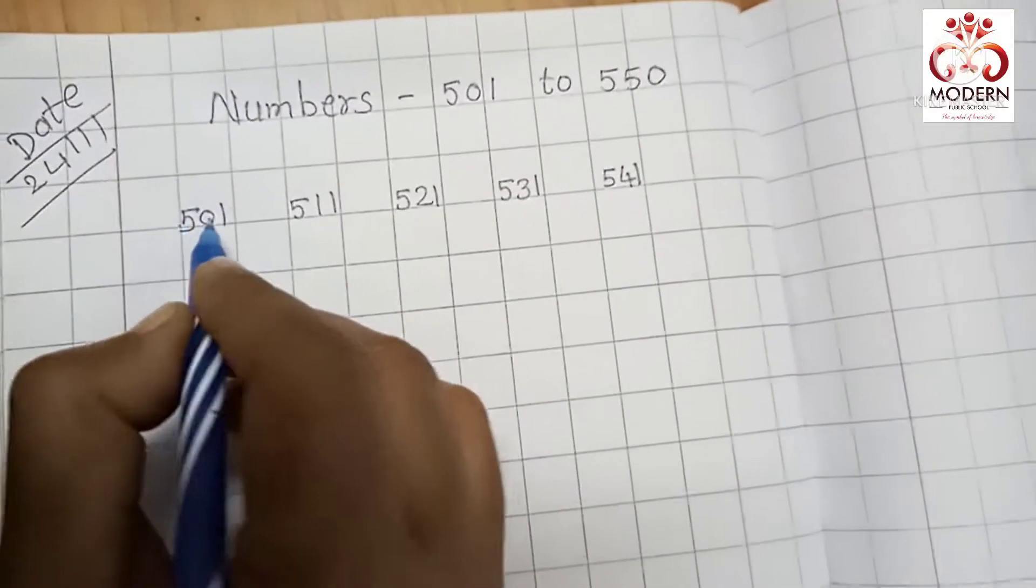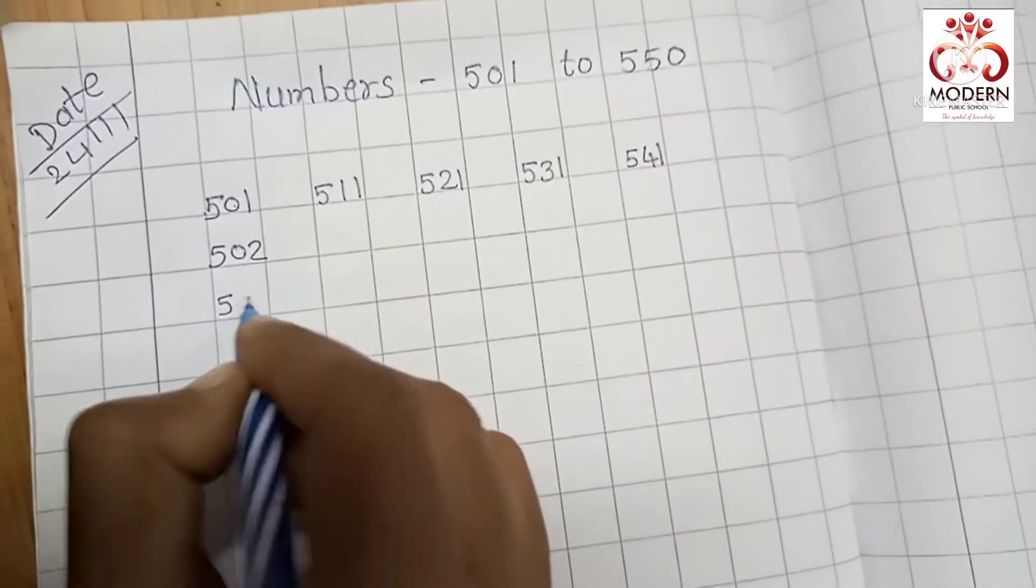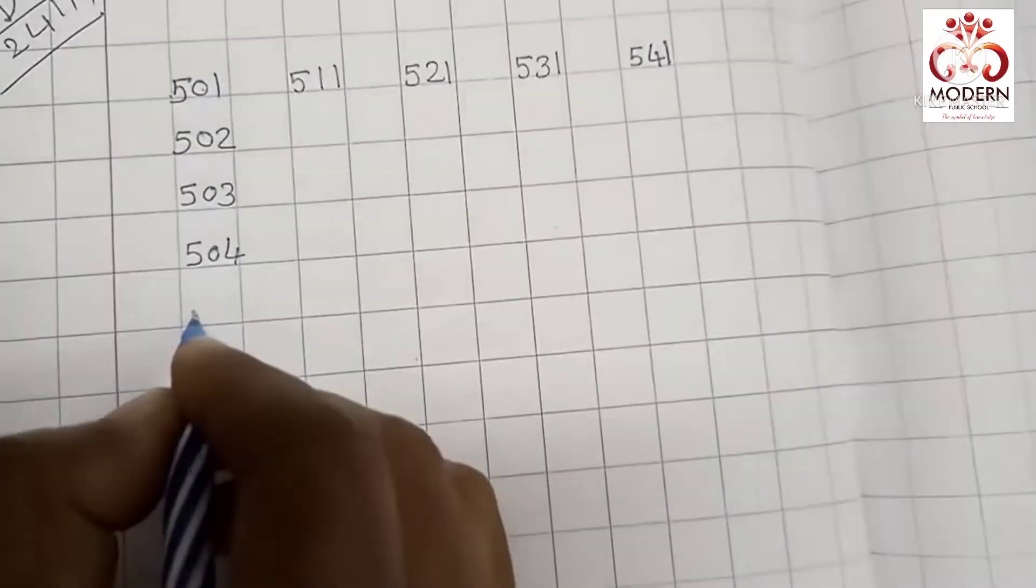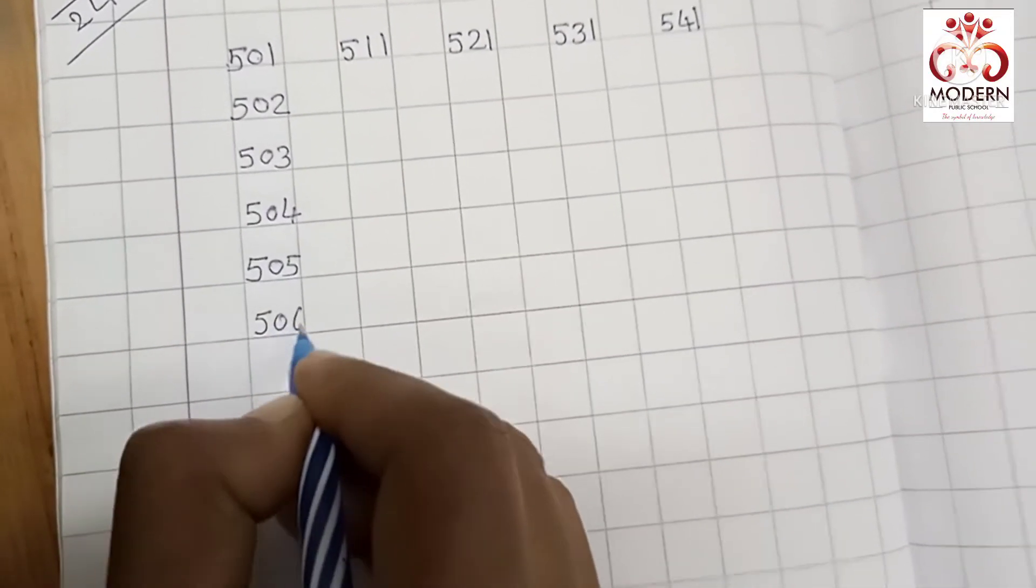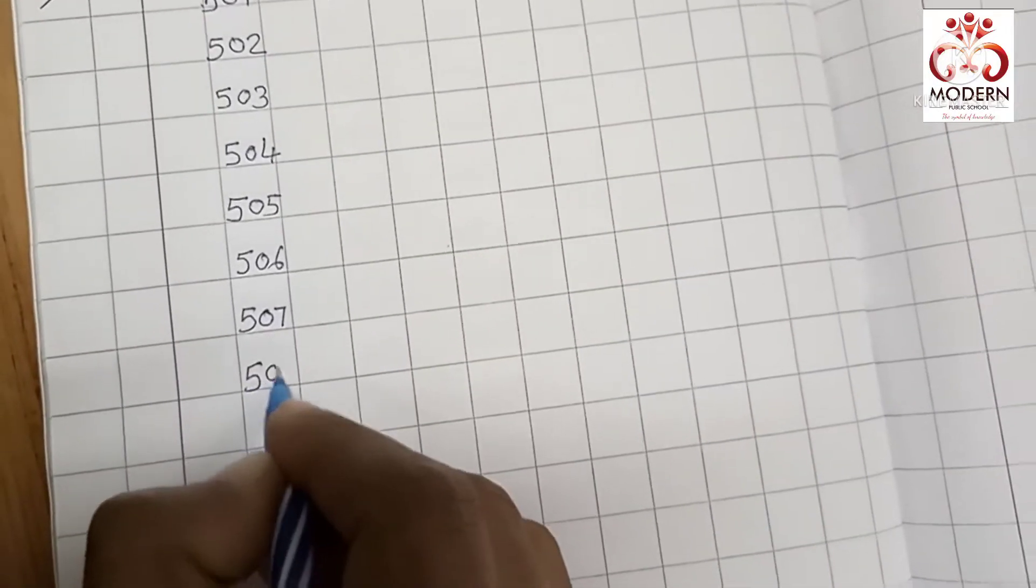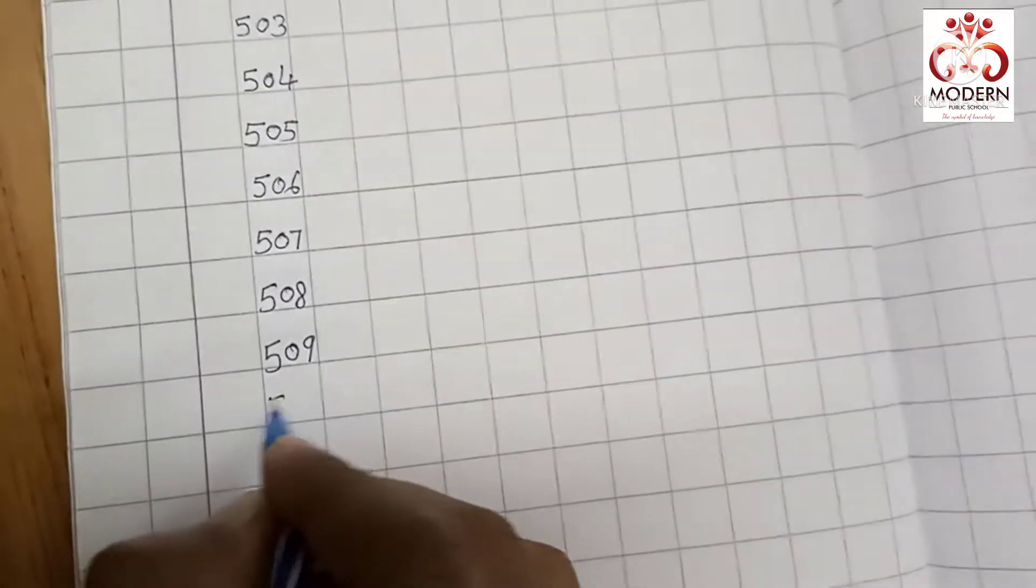Now let's start right. 501, 502, 503, 504, 505, 506, 507, 508, 509, 510.